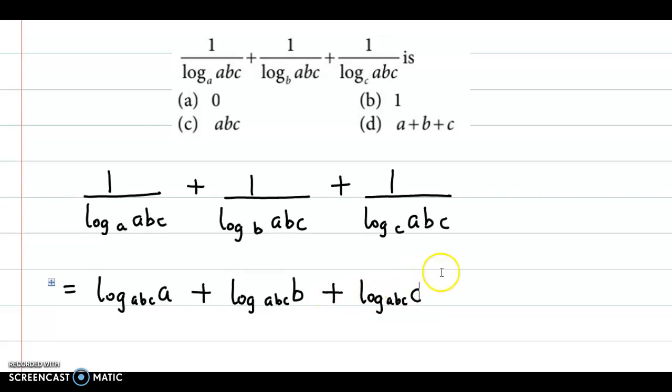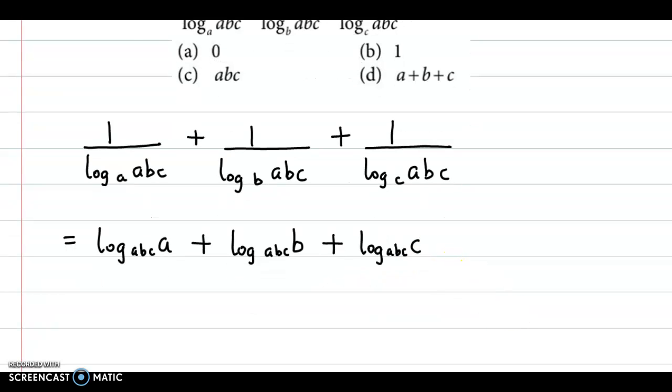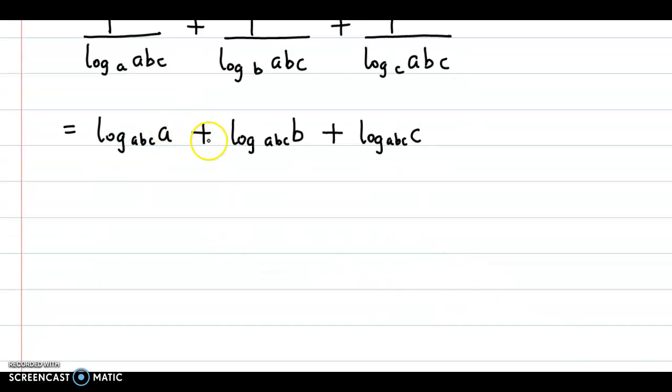Now, we can combine the three log terms into a single log because here is addition and the base is the same. So this could be combined as log of A into B into C, or the base is ABC.